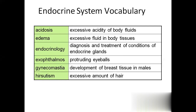Coming to the very first one: acidosis. Usually our body is slightly alkaline. The normal pH of our blood is 7.35 to 7.45, which is slightly alkaline. Our body should not be acidic at all. If any problem with the balancing, such as any problem with the thyroid hormones or adrenal cortex hormones such as mineralocorticoids, our body will become more acidic. That condition we call acidosis.